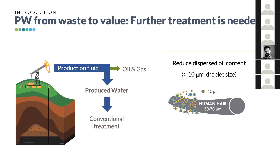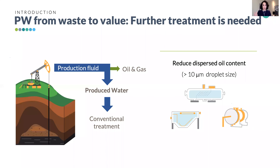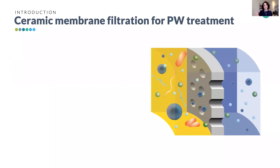Conventional treatment does a pretty good job reducing dispersed oil content by removing oil droplets bigger than 10 micrometers — about seven times smaller than the diameter of a human hair. Conventional treatments include plate interceptors, gas flotation, and hydrocyclones, which are well established in the industry. However, these systems have low efficiency removing emulsified oil and submicron contaminants. Therefore, membrane filtration using ceramic membranes represents a robust technology capable of operating under a wide variety of produced water characteristics.